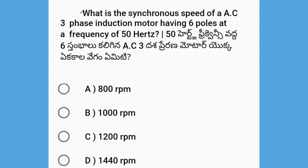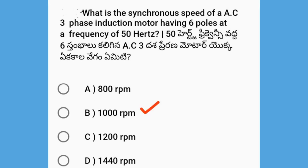Next, what is the synchronous speed of an AC three-phase Induction Motor having 6 poles at a frequency of 50 Hz? The options are 800 rpm, 1000 rpm, 200 rpm, and 1440 rpm. The answer is 1000 rpm.